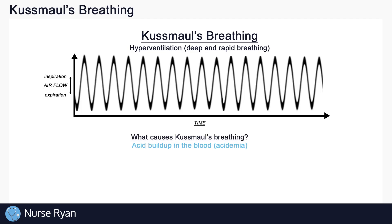So what causes Kussmaul's breathing to occur? Kussmaul's breathing typically occurs when there is a buildup of some acidic substance in the blood. This is known as acidemia.